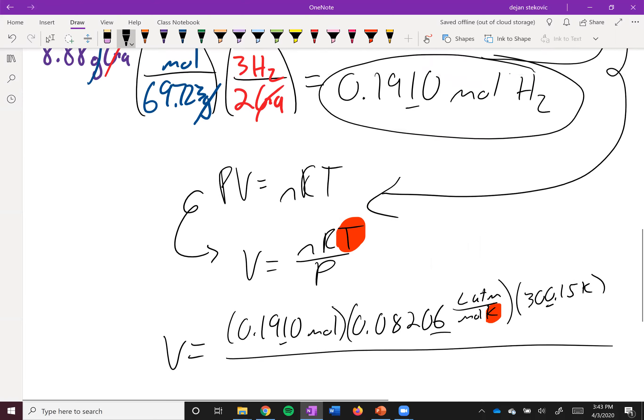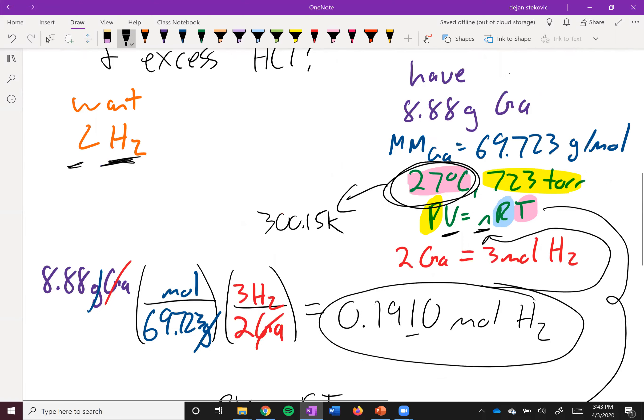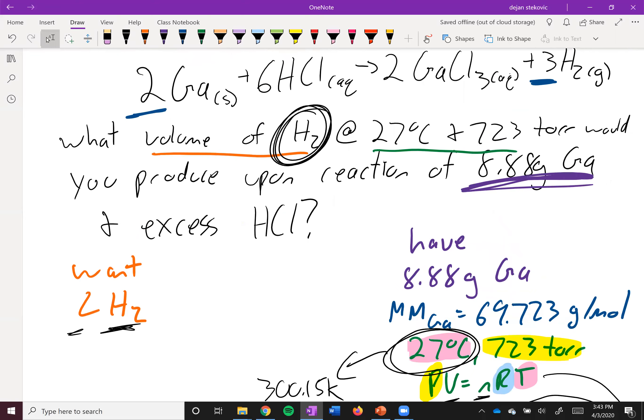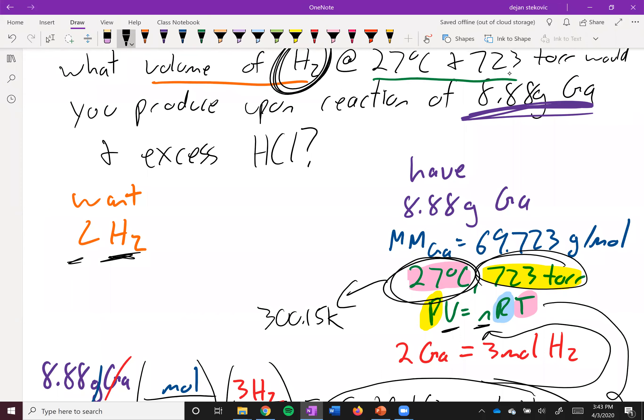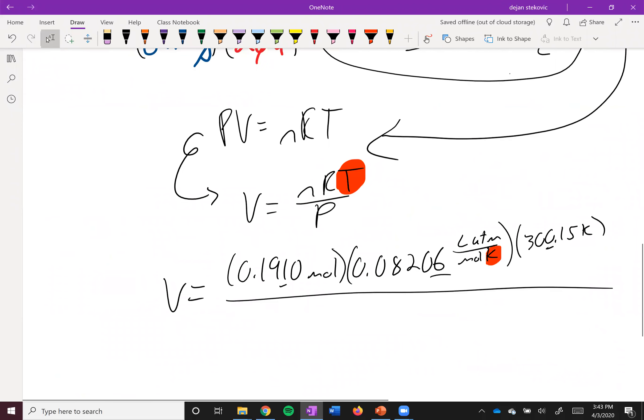And then we're going to divide that by the pressure. Which we're giving here as 723 Torr. But you have to be careful here. It's an atmosphere. So we have to convert that.